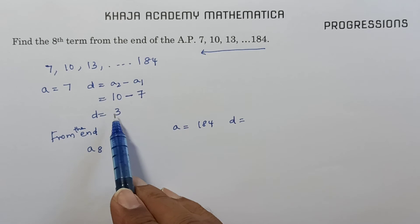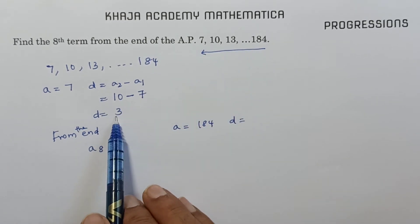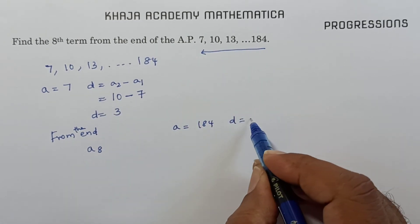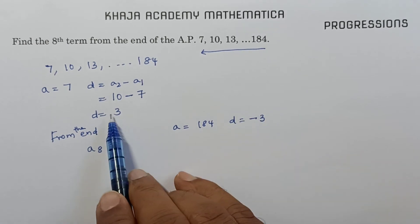And common difference will be, see in the starting, if you start the series from here, you got common difference 3. So if you get 3 here, now from the end, it will be minus 3.